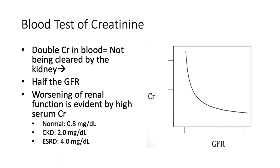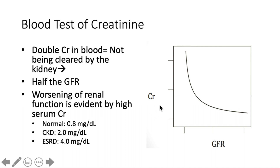The most helpful concept is the relationship between serum creatinine and GFR: if creatinine doubles in the blood, GFR is halved. When creatinine builds up in the blood, it means the kidney isn't removing it — something is wrong. Normal creatinine may be 0.8; in chronic kidney disease it may be 2.0, and in advanced renal disease levels of 8, 9, or 10 are possible. Memorize this inverse relationship to understand kidney function.